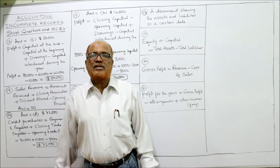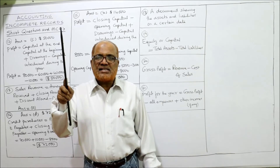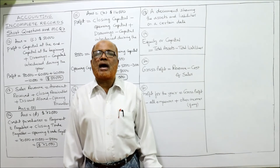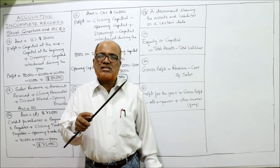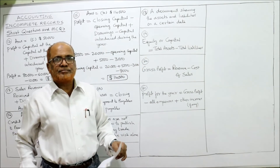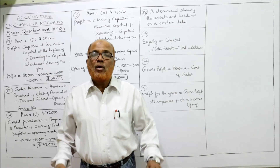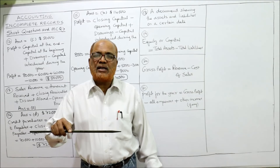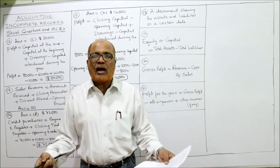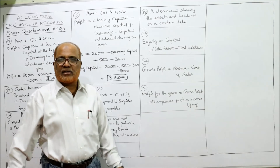Problem 18: what is a statement of affairs? As explained in the theory video, a statement of affairs is a document that lists all assets and liabilities. Assets are on one side, liabilities on the other. Assets minus liabilities equals capital or equity — so the statement of affairs is prepared to ascertain the capital. Problem 19: what do you get if you subtract total liabilities from total assets? The answer is capital or equity: capital = total assets − total liabilities.